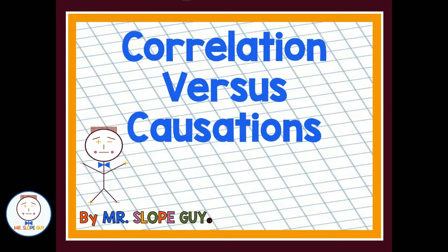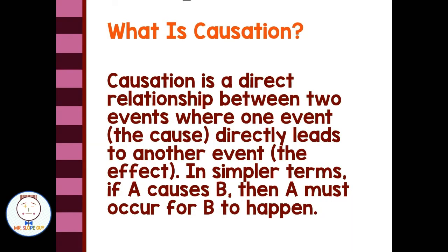Hello. In today's lesson, we're going to talk about correlation versus causation. Causation is a direct relationship between two events, where one event directly leads to the other event. In simpler terms, if A causes B, then A must occur for B to happen.